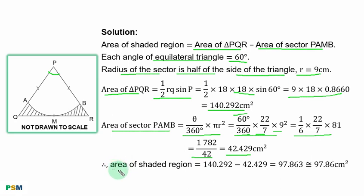Therefore, area of shaded region is equal to area of the triangle minus area of the sector, and you have 97.863 to 2 decimal places.